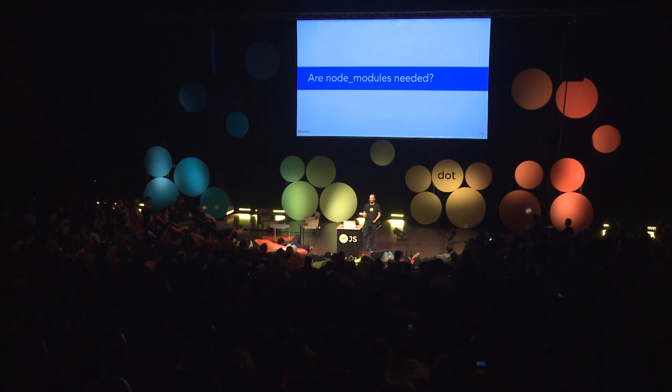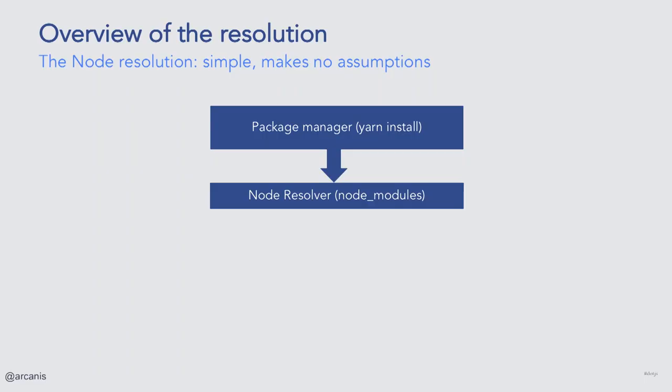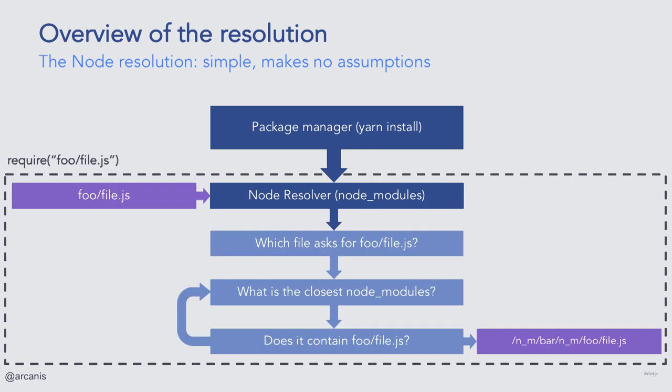So we've seen that node_modules are a problem. But can we really get rid of them? Can we find something better that works right now with the ecosystem as it currently is? To answer this question, let's talk about what the Node resolution algorithm actually is. It all starts with Yarn creating a node_modules folder when you run Yarn install. After that, when you make the actual require call, Node asks itself the same question over and over: does this file exist? No — let's try in the parent folder. It repeats this until it finds a matching entry. It purely reasons in terms of files and directories; it knows nothing about packages.